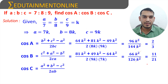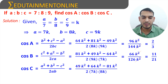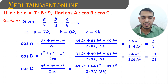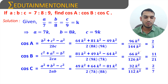cos C = (A² + B² − C²) / 2AB. Substituting: A² = 49k², B² = 64k², and C² = 81k², divided by 2 × 7k × 8k. Resolving: 49 + 64 − 81 = 32k² divided by 112k². k² cancels, giving 32/112 = 2/7.